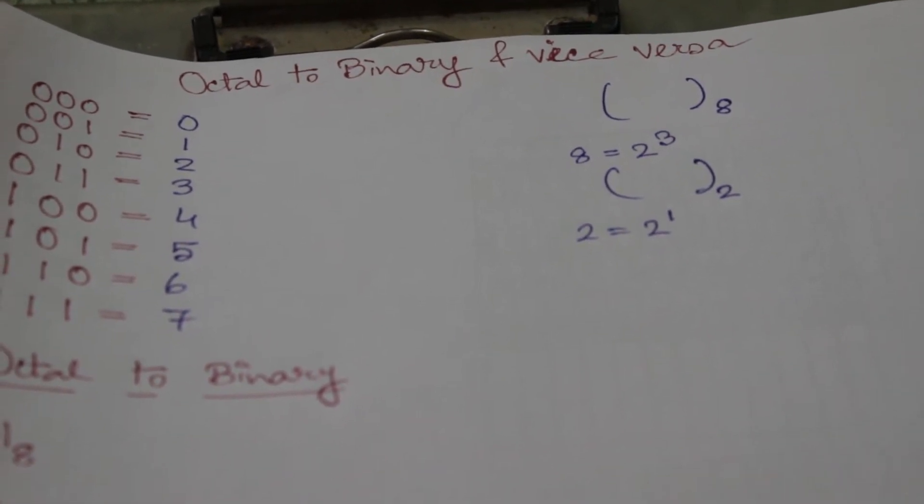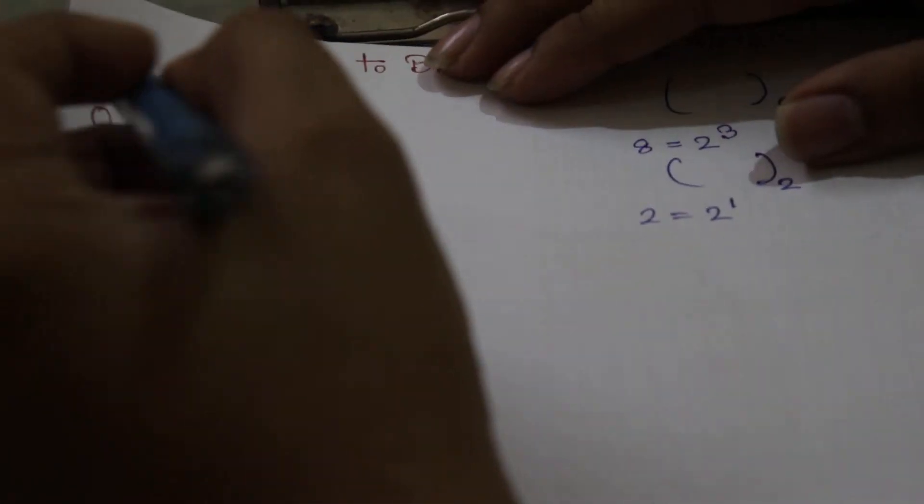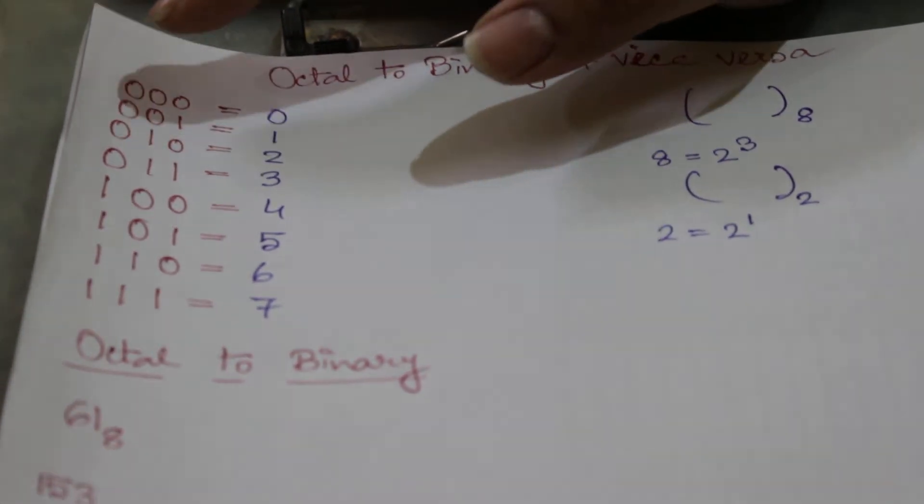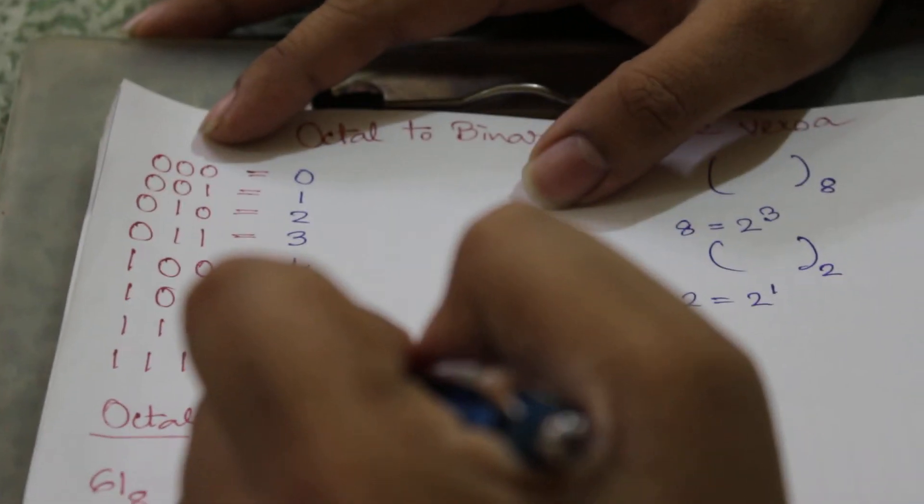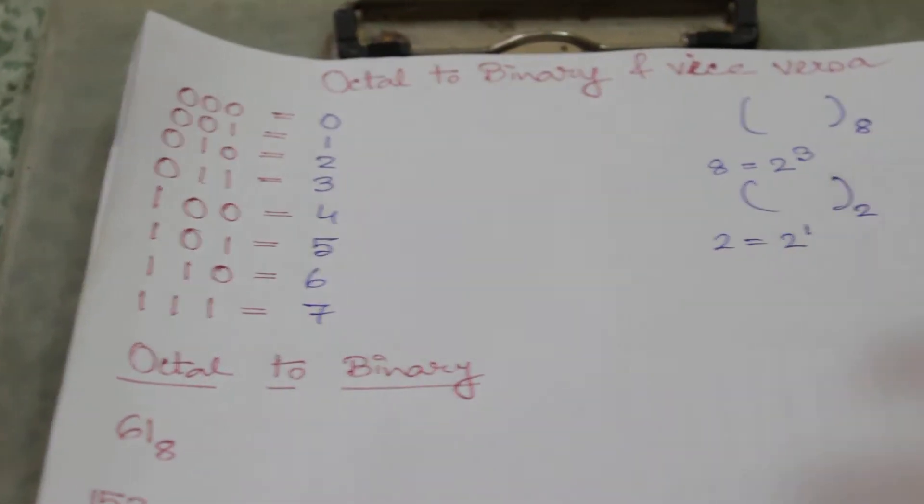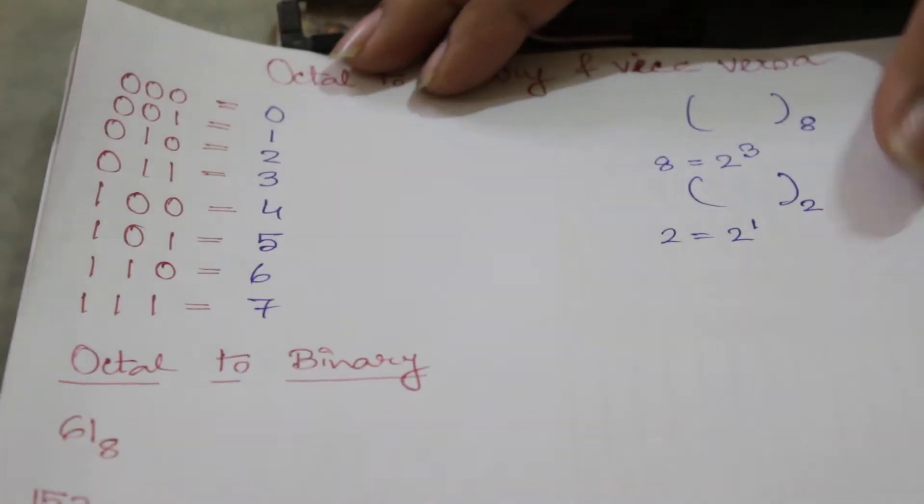Now what we have to just remember, these are the eight numbers in binary numbers. We have written the corresponding decimal numbers. We will replace this in the binary parts taken three together.